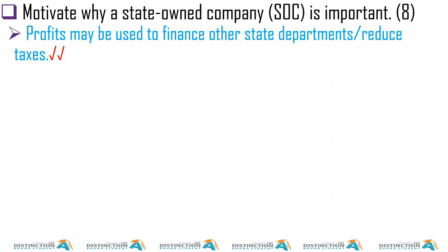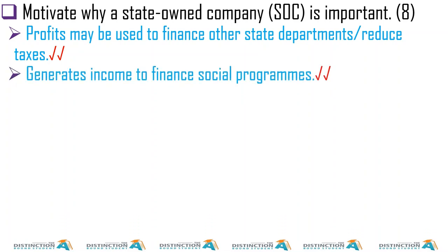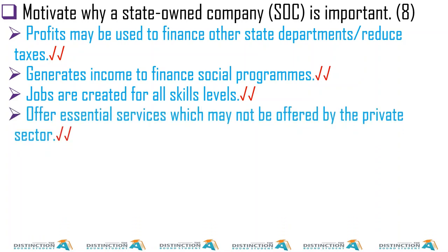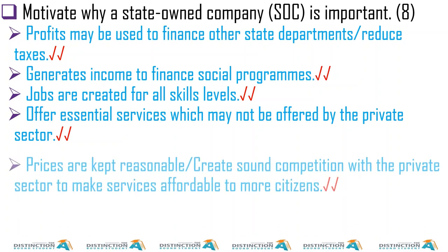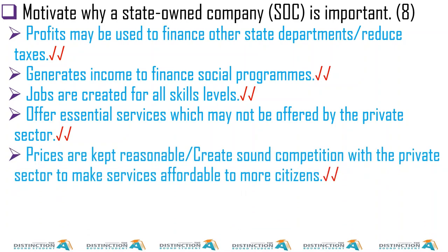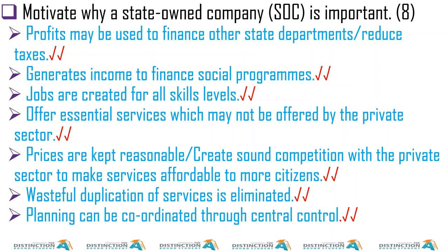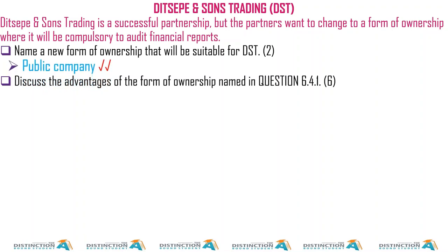Motivate why a state-owned company is important. Number one: profits may be used to finance other state departments or reduce taxes. It generates income to finance social programs. Jobs are created for all skill levels. It offers essential services which may not be offered by the private sector. Prices are kept reasonable, and it creates sound competition with the private sector to make services affordable to more citizens. Wasteful duplication of services is eliminated, and planning can be coordinated through central control.